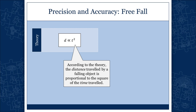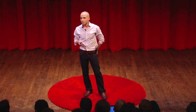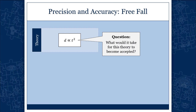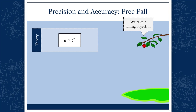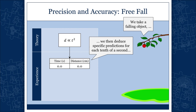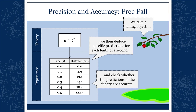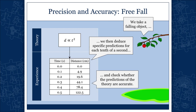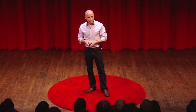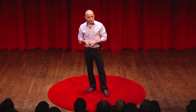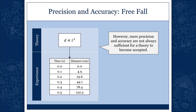Let's take a basic example: the law of free fall. The law says the distance travelled by a fallen object is proportional to the square of the time elapsed. What would it take for this theory to become accepted? You'd have to do some sort of experiment — see whether it fits the data. We take a fallen object, deduce specific predictions from the equation, and then check whether that actually fits the actual data. And we see that it does. This would be sufficient to convince us that the equation is correct — the general idea being: whether it fits the data.